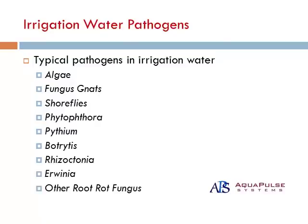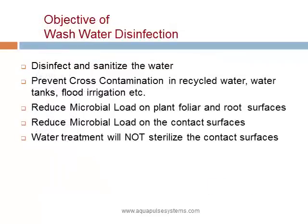Water may contain pathogens such as algae, fungus, phytophthora, pythium, and other root rot organisms. We want to disinfect and sanitize the water to prevent cross contamination and to reduce microbial load on the foliar surfaces and on the roots to prevent disease. However, water treatment with a sanitizer will not remove the pathogen once it has infected the plant.